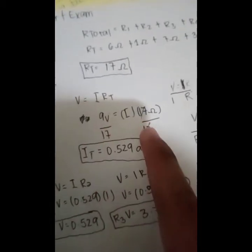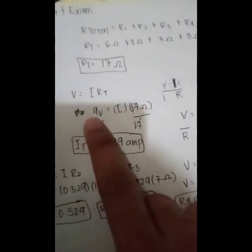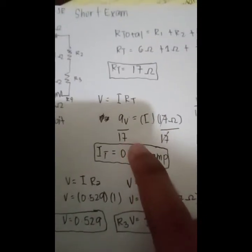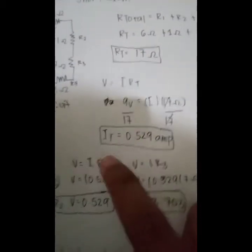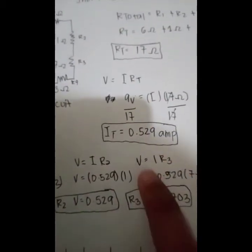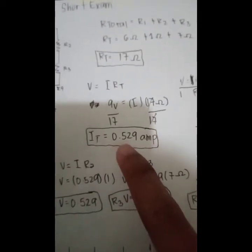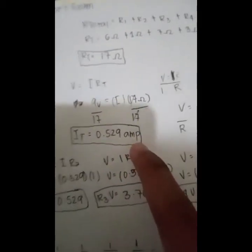To solve that, we need to substitute 9 volts from the power source, and 17 ohms which is the R total. We will have a current total of 0.529 amperes.